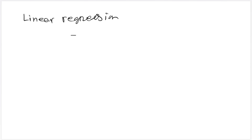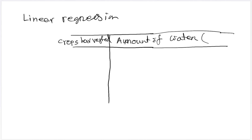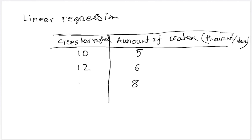Let's discuss what a linear regression model is. Let us say that we have a dataset, and in this dataset there are two columns. In the first column, we have the amount of crops harvested. In the second column, we have amount of water — there are some associated units, maybe 1,000 gallons per day or something like this. So let's say that when we have 5 units of water, the harvest amount is 10. When we have 6 units of water, we have a harvest amount of 12. When we have 8 units of water, we have a harvest of 16.